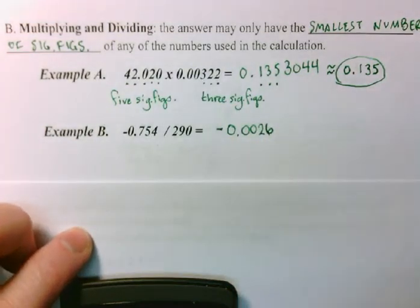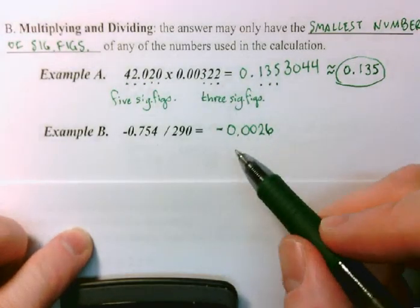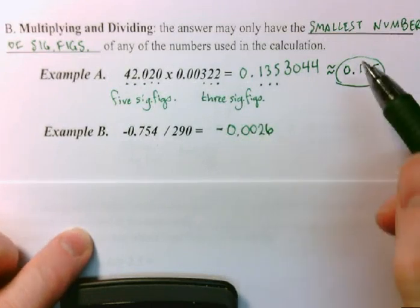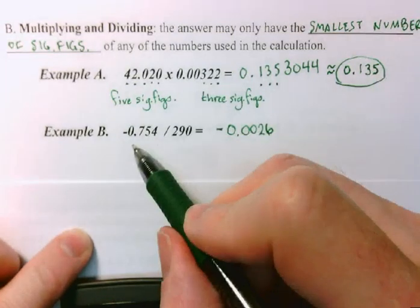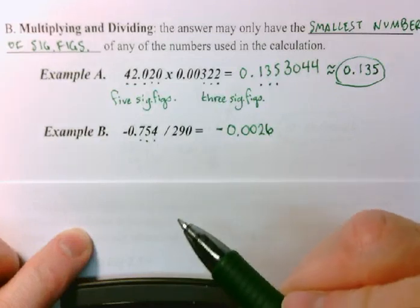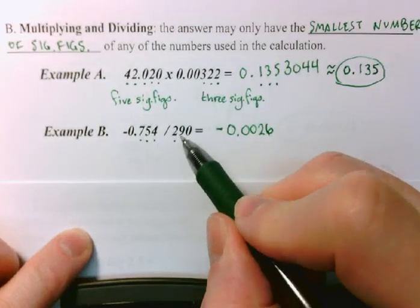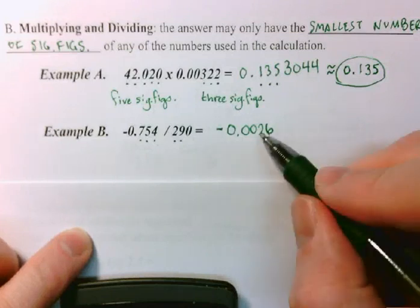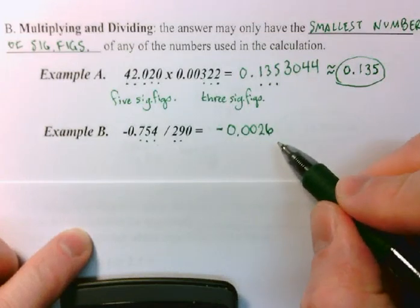Well, that is the mathematically correct answer. But what is the scientifically significant answer? The rule says that my answer can only be reported out to the smallest number of sig figs. Here, in this number, I have 1, 2, 3 sig figs. And therefore, my answer can only be reported out to 2 sig figs.